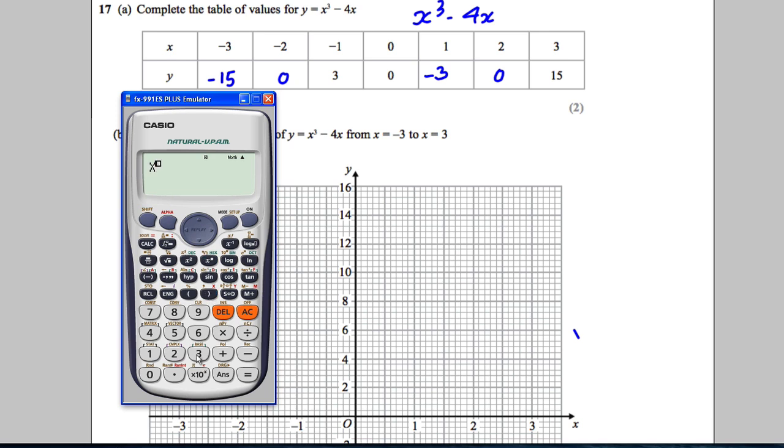Press calculate, and you want to put in -3, there you go, there's the answer. You want to put in -2, there you go. You want to put in 1, press calculate, there's the answer. If you want to put in 2, press calculate, put x is 2 in, there's the answer. So that's really useful.